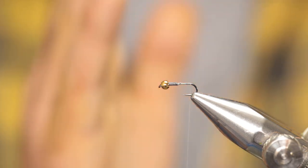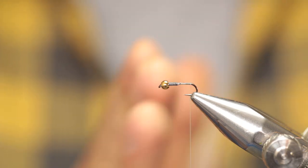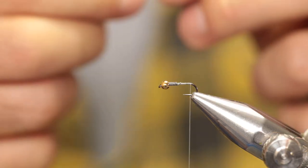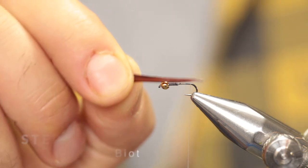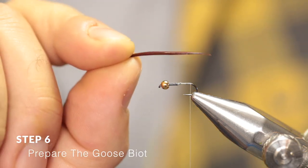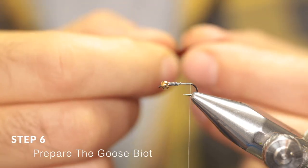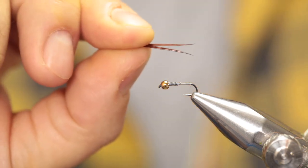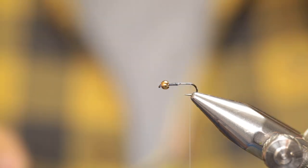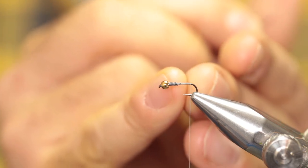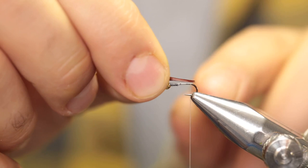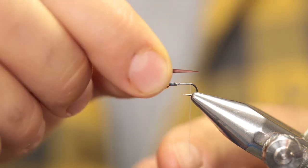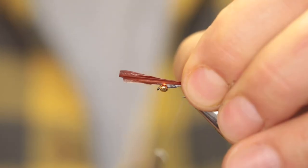Cut off two sections from your goose biots. To prepare them, you'll see they have a natural curve to one side, so take one fiber and put it back to back to the other fiber so they flare outwards. Make sure the tips align. The length of the tail should be about the same length or slightly shorter than the abdomen. Measure that, pinch material on top of the hook.